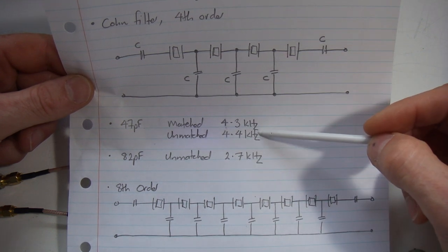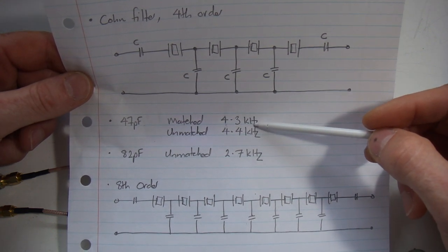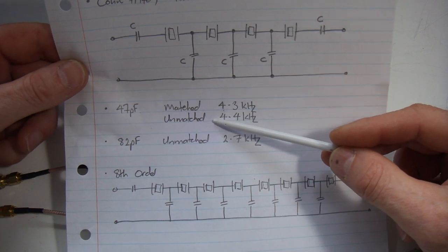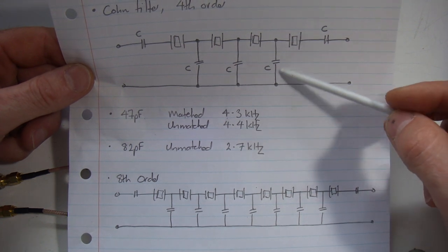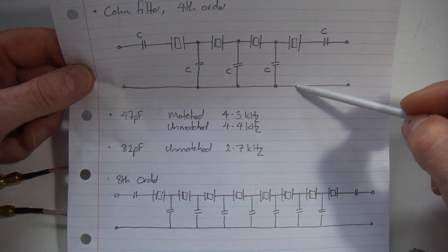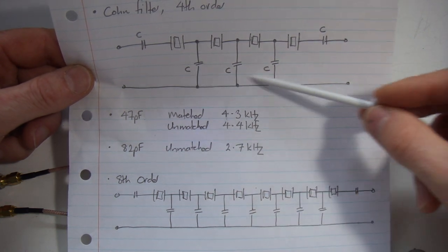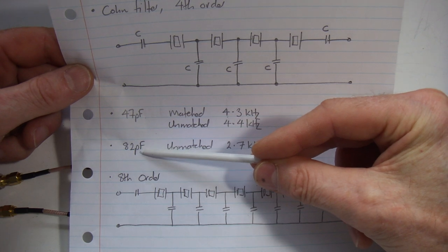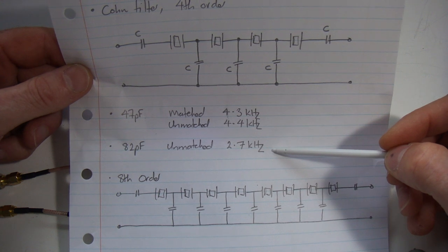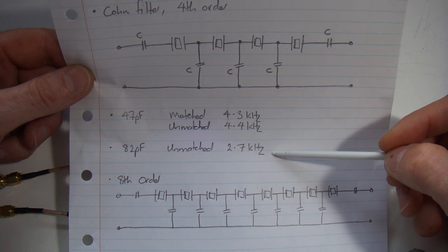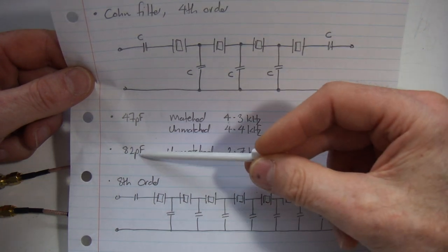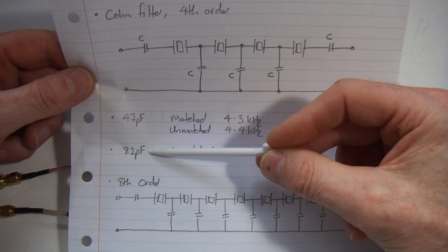Only 100Hz difference between the two, so for intents and purposes they were essentially the same. I started playing around with the unmatched set. I increased the capacitance to decrease the bandwidth, so I upped those capacitor values to 82 picofarads, retested them, and came out at 2.7kHz, which is a pretty common bandwidth for an SSB crystal filter. I'm going to stick with 82 picofarads.